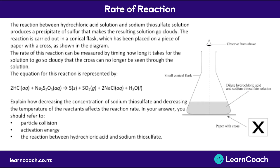Let's look at a question now. We react hydrochloric acid and sodium thiosulfate, which produces a precipitate — a cloudy powder — making the solution go cloudy. The reaction is carried out in a conical flask placed over a piece of paper with an X on it, so you can see the X when looking down through the flask. The rate of reaction is measured by timing how long it takes for the solution to go cloudy and obscure the X. We need to explain how decreasing the concentration of sodium thiosulfate and decreasing the temperature affects the rate of reaction.